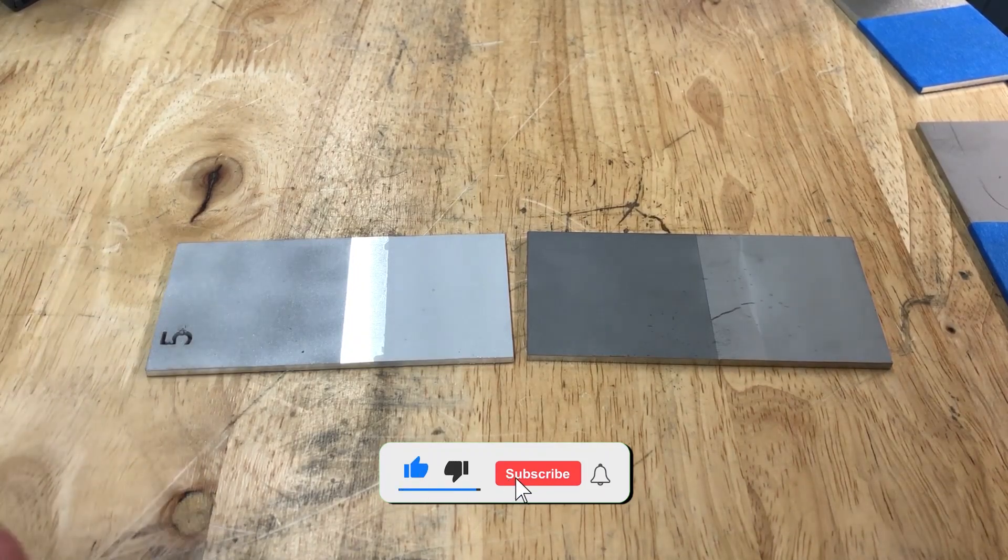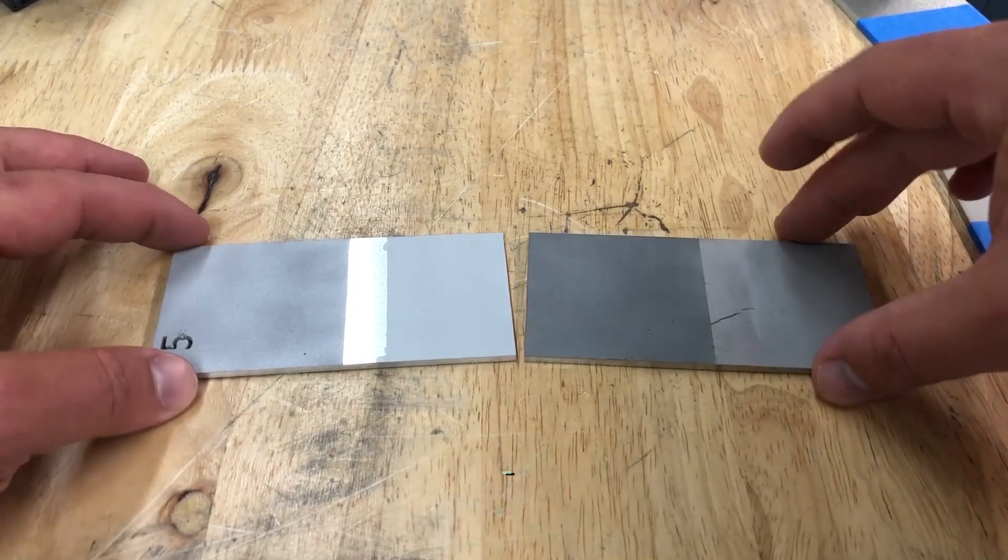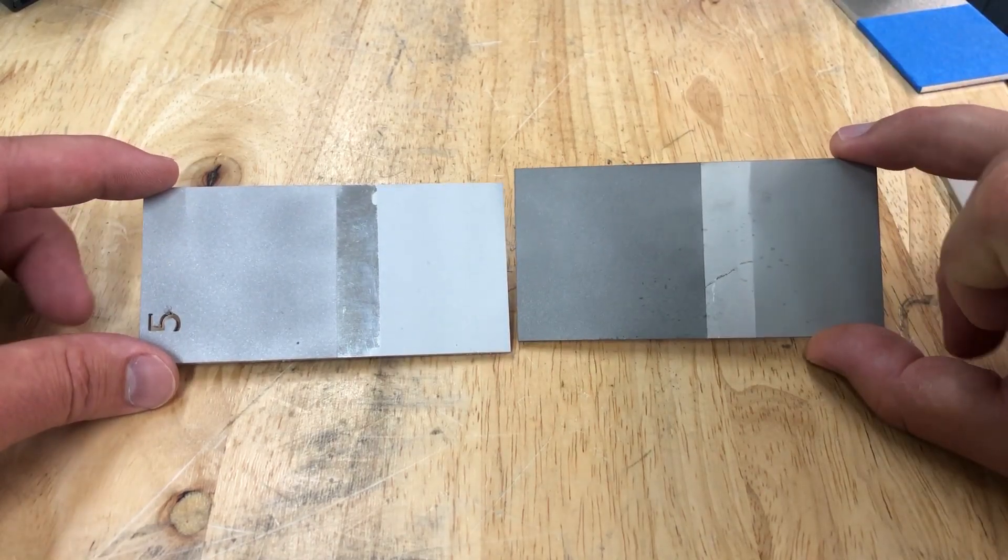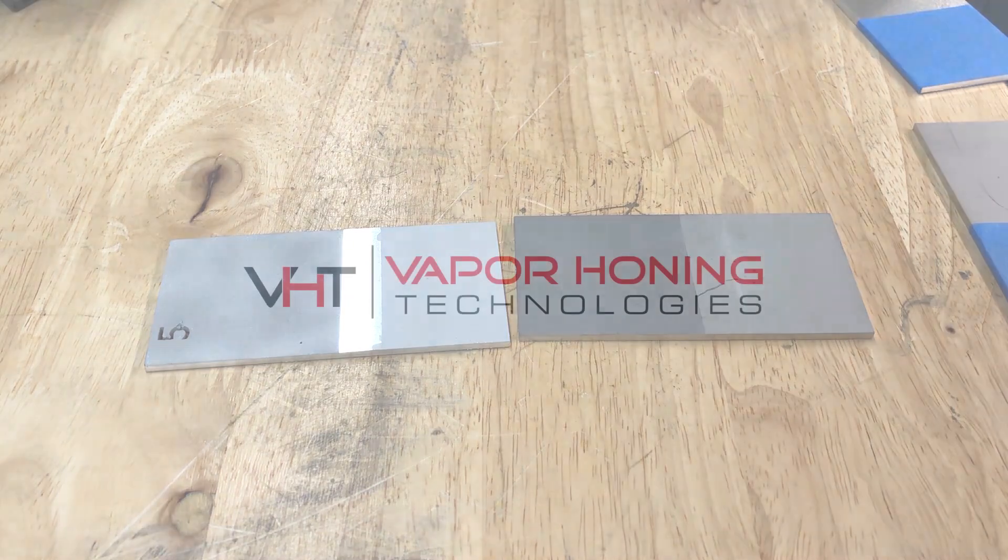Again, we're showing you wet blast versus dry blast using 220 grit aluminum oxide, and that is brown aluminum oxide, not the white. That is what this video is all about. So we will show you what the roughness profile looks like, so stay tuned. Thanks for watching.